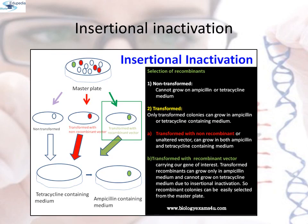Here is a diagrammatic representation of insertional inactivation showing selection of recombinants: non-transformed bacteria cannot grow in ampicillin or tetracycline medium. Transformed ones with a non-recombinant or unaltered vector can grow in both ampicillin and tetracycline-containing medium. Transformed bacteria with a recombinant vector carrying our gene of interest grow only in ampicillin medium and cannot grow in tetracycline medium due to insertional inactivation. Thus, recombinant colonies can be easily selected from the master plate.